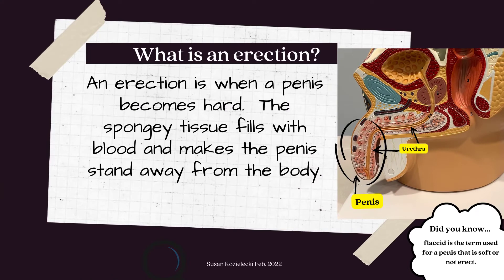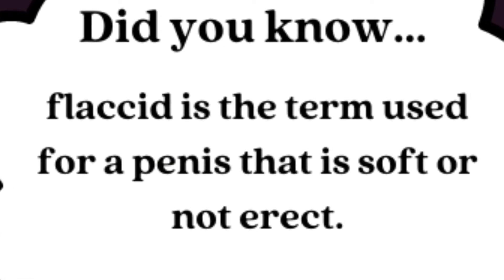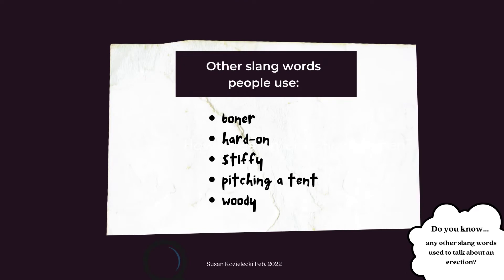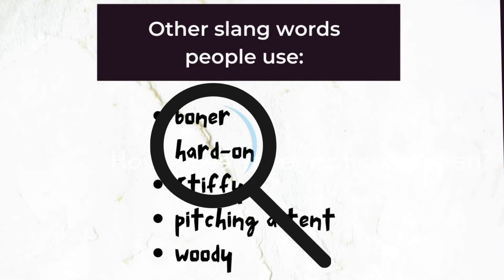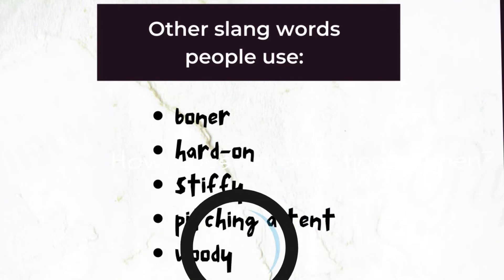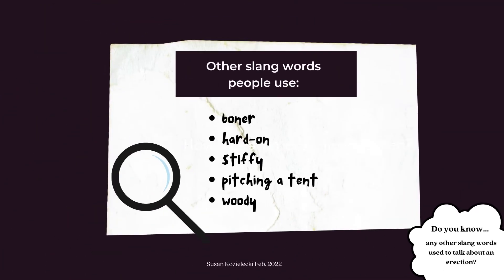What is an erection? An erection is when a penis becomes hard — the spongy tissue fills with blood and makes the penis stand away from the body. Did you know "flaccid" is the term used for a penis that is soft or not erect? There are lots of words people use for an erection, such as boner, hard-on, stiffy, pitching a tent, and woody.